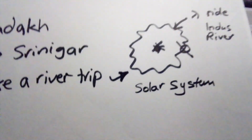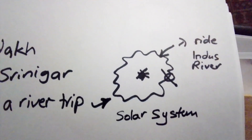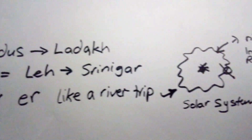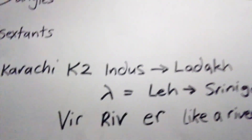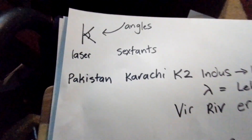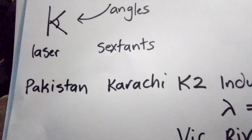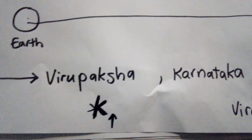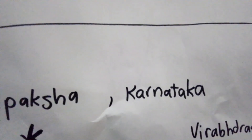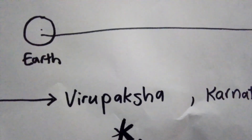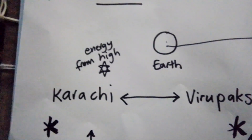So the Indus River was chosen to represent the Lambda ride round the sun, which is like a river ride. There's a river there — it's called the Indus River, it goes down. We've got K — two stars to mark it. You have to go to two stars. You have to go to Virupaksha in Karnataka because you have to go to a dry place. And then you have to look at angles.